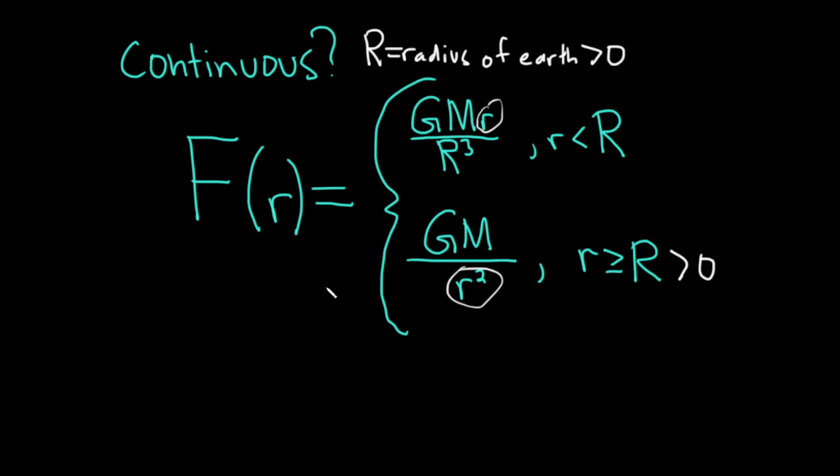So just from inspection, this piece here and this piece here are continuous. Little r is positive, so there's no issues at all. So the only place where it's questionable that it might not be continuous would be at big R. So we simply just have to verify that it's continuous at big R. So let's check.